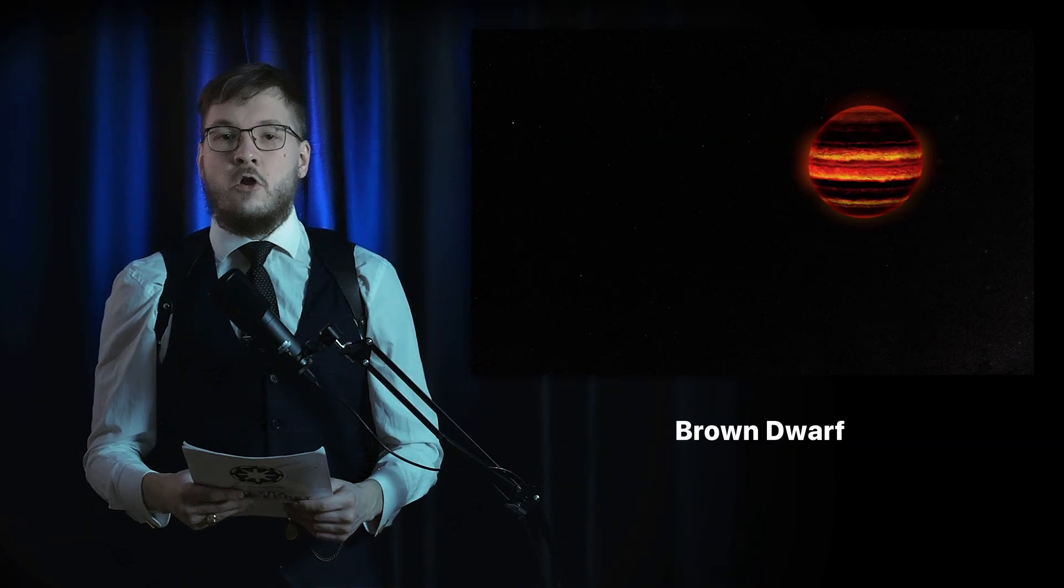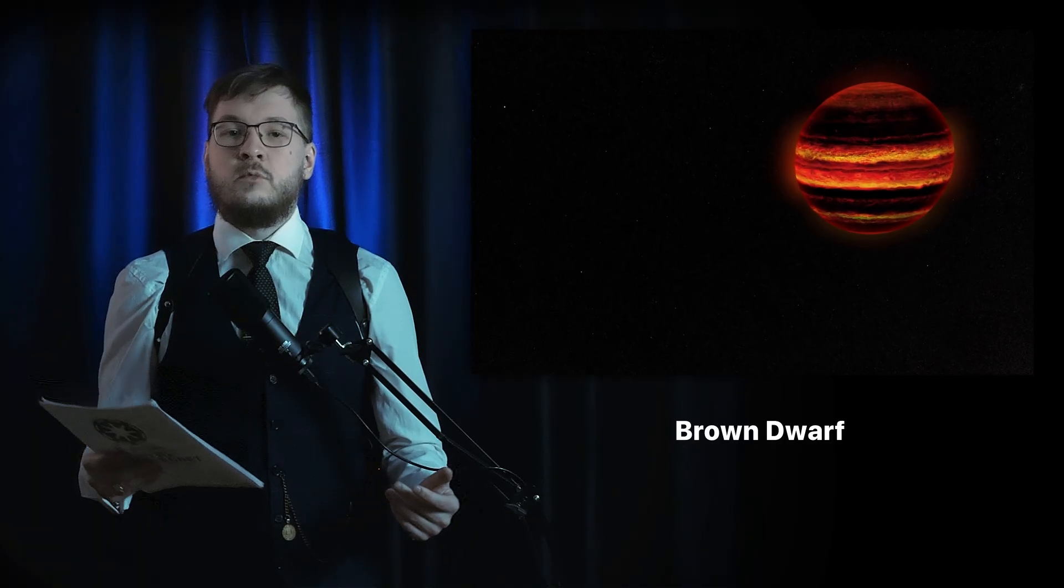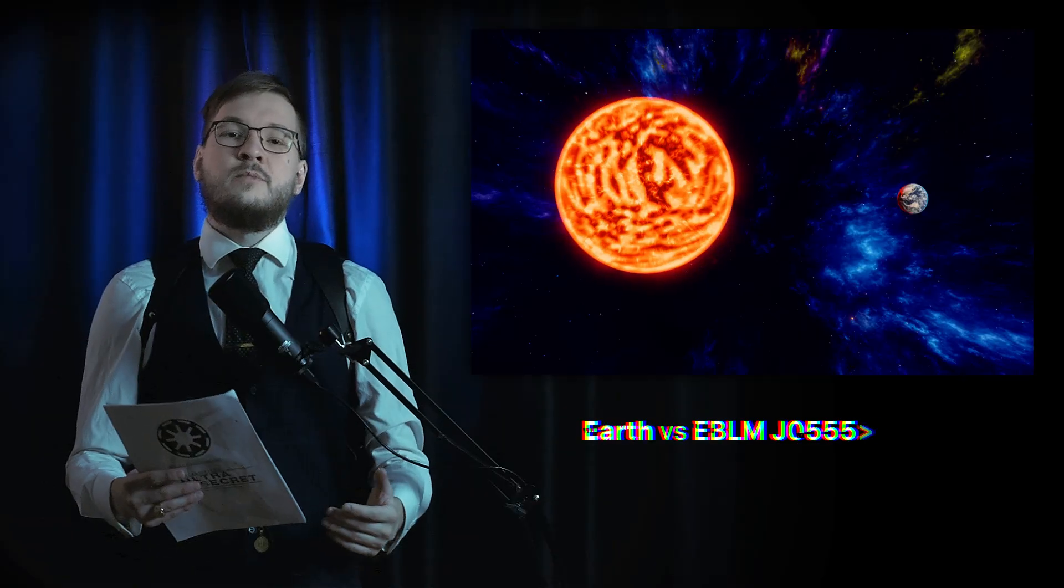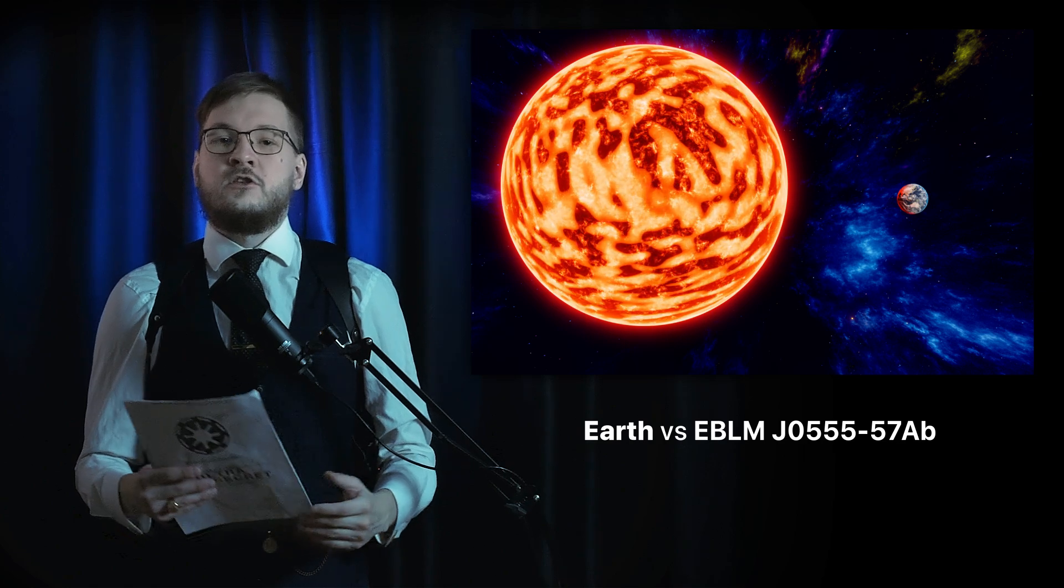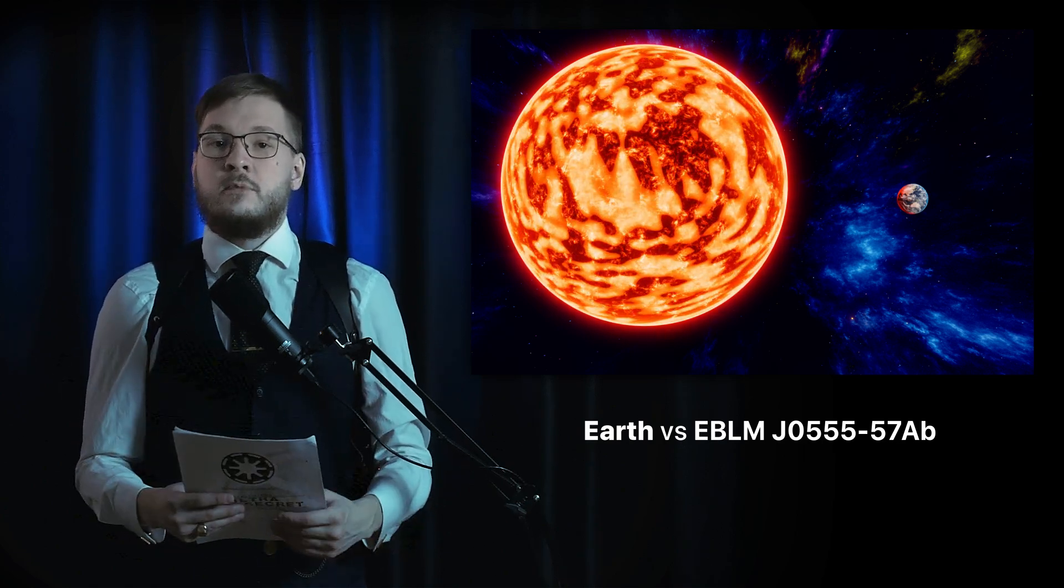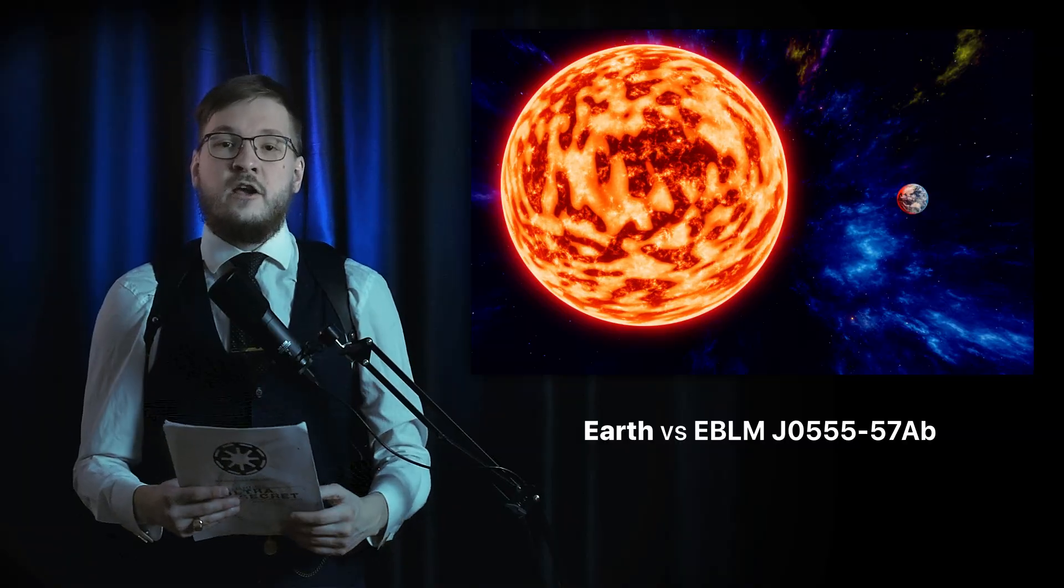A substellar object that glows faintly from leftover heat but never truly shines. Being just about 59,000 km in radius, 57 AB produces just a fraction of a percent of the sun's energy output.